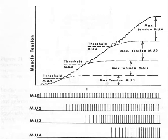So again, we have a theoretical graph with muscle tension on the vertical and time on the horizontal. And then we have motor unit 1 represented here, motor unit 2 here, 3, and then 4.